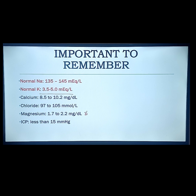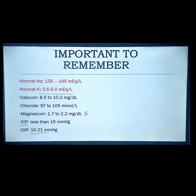We also have intracranial pressure, which should be less than 15 mmHg. Knowing the ICP level will determine the use of osmotic diuretics later on. We also have intraocular pressure, which is 10 to 21 mmHg — important when dealing with patients with glaucoma who will also take diuretics. Those are the important things to remember.